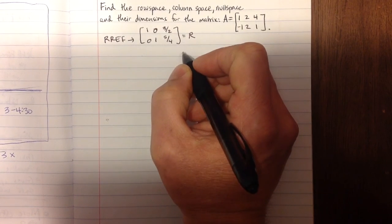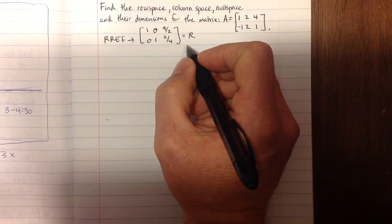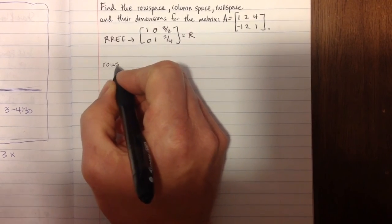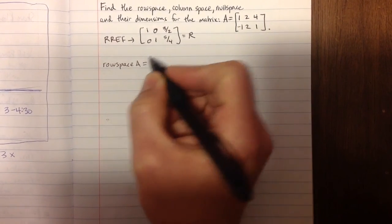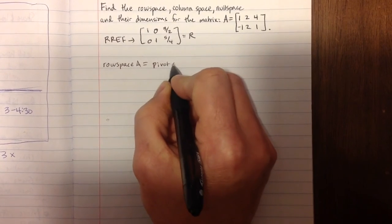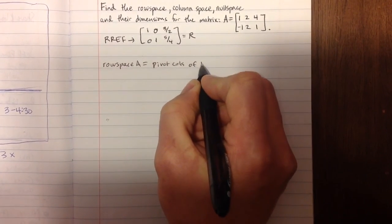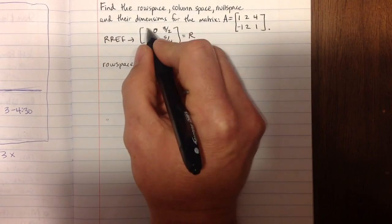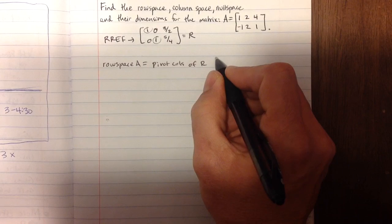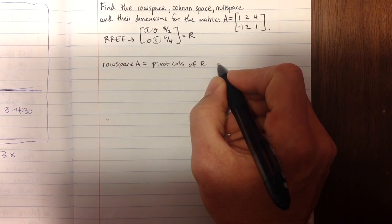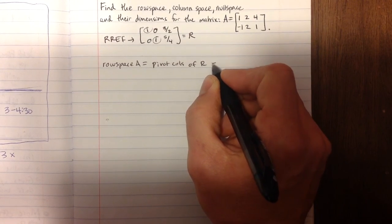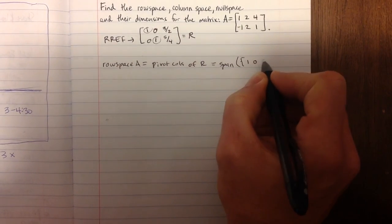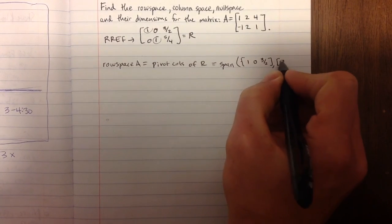We're going to be using this matrix R to find all these things. The easiest way to find the row space of A is looking at the pivot columns of our reduced matrix R. It has to be the reduced matrix, not the matrix A. Notice we have two pivots here. So we take both of those columns in reduced row echelon form. The row space of A equals the span of 1, 0, 3 halves and 0, 1, 5 fourths.